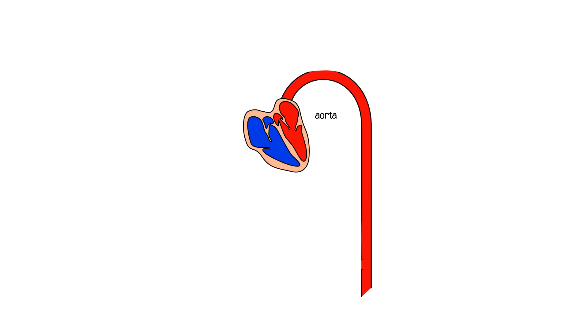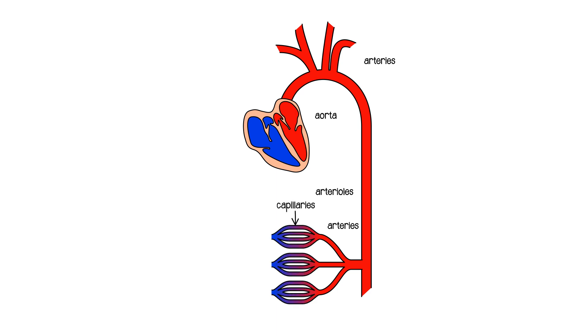Now I'm not going to draw the anatomy precisely, but what's going to happen is that aorta will divide into arteries, and the arteries will divide in turn into arterioles. The arterioles will then divide into capillaries, so we've got a big capillary bed.